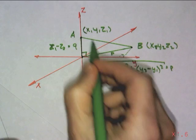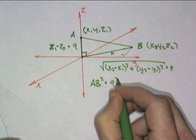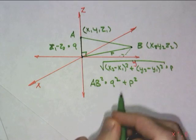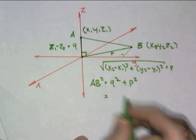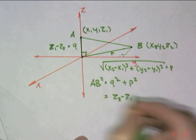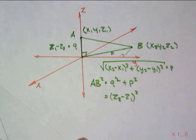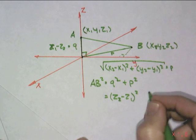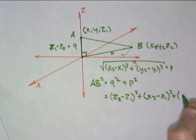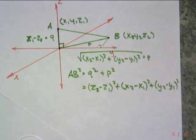To get the distance from A to B, AB squared would be nothing more than Q squared plus P squared. Q squared is (z2 minus z1) squared, and P squared is the original distance formula: (x2 minus x1) squared plus (y2 minus y1) squared. That equals AB squared.